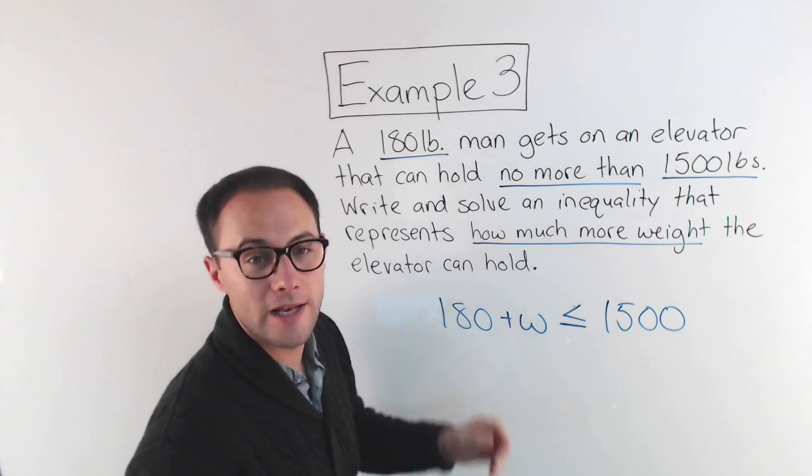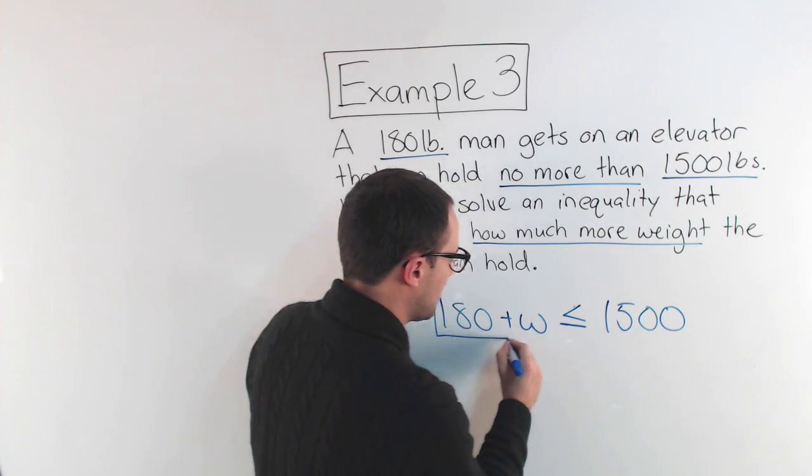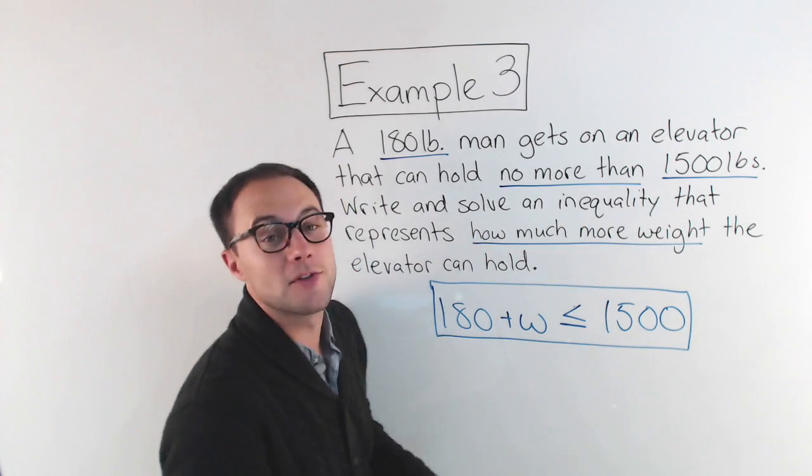So 180 plus W is less than or equal to 1,500 pounds. That's the first part. We wrote an inequality. Now it's time to solve it.